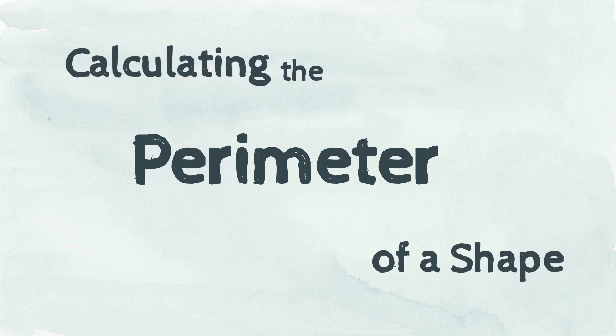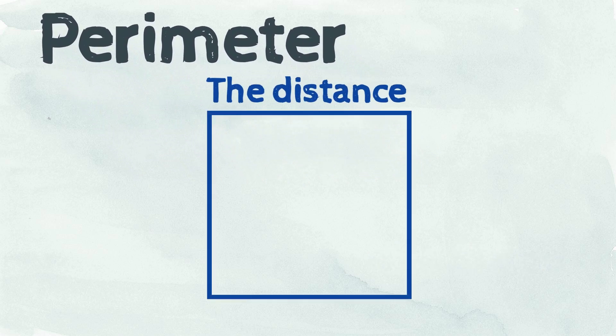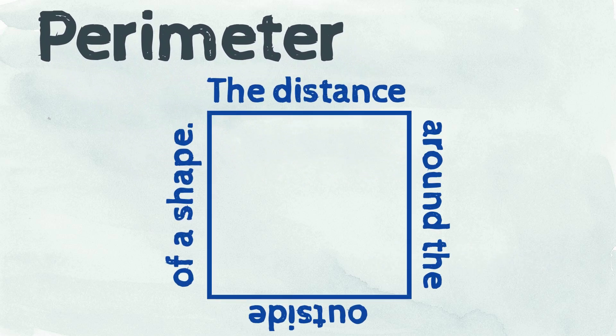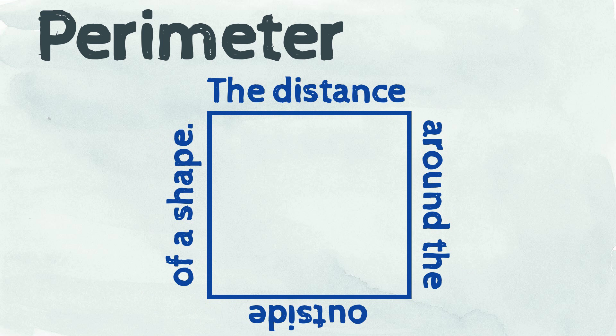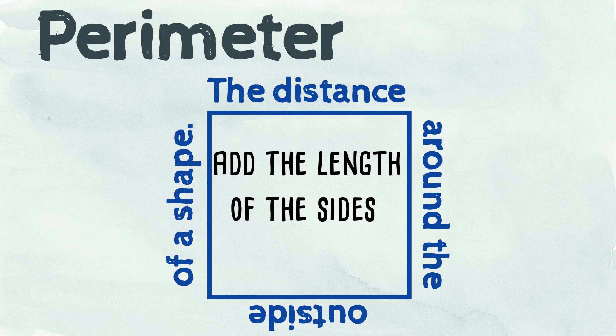Calculating the perimeter of a shape. The perimeter is the distance around the outside of a shape. To calculate the perimeter of a shape, all we have to do is add the length of each of the sides together.